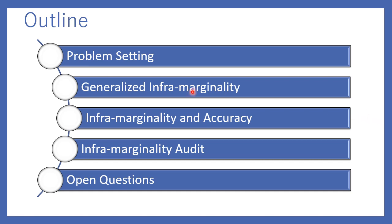Here's the outline of my talk. I'll first describe the problem setting, then deep dive into the key contributions of this paper — namely a generalized definition of inframarginality. Then I'll talk about how inframarginality and accuracy are related. Finally, I'll outline a workflow for auditing classifiers in terms of inframarginality, and conclude with some open questions.